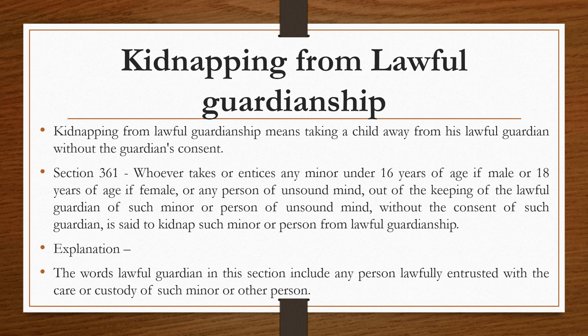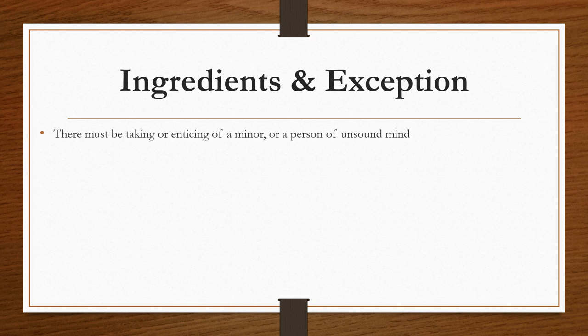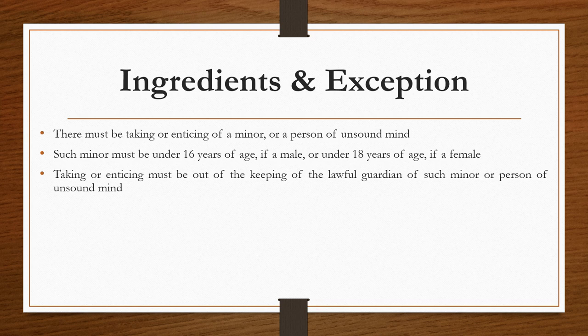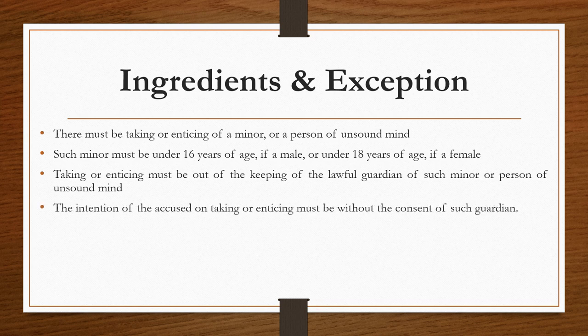Only the consent of the lawful guardian will be considered valid. So taking away a child or a person of unsound mind — even if they give consent — will be considered kidnapping if done without the permission of the lawful guardian. The ingredients of Section 361 are: there must be taking or enticing of a minor or a person of unsound mind; such minor must be under 16 years of age if male or 18 years if female; the taking or enticing must be out of the keeping of the lawful guardian; and it must be without the consent of such guardian.